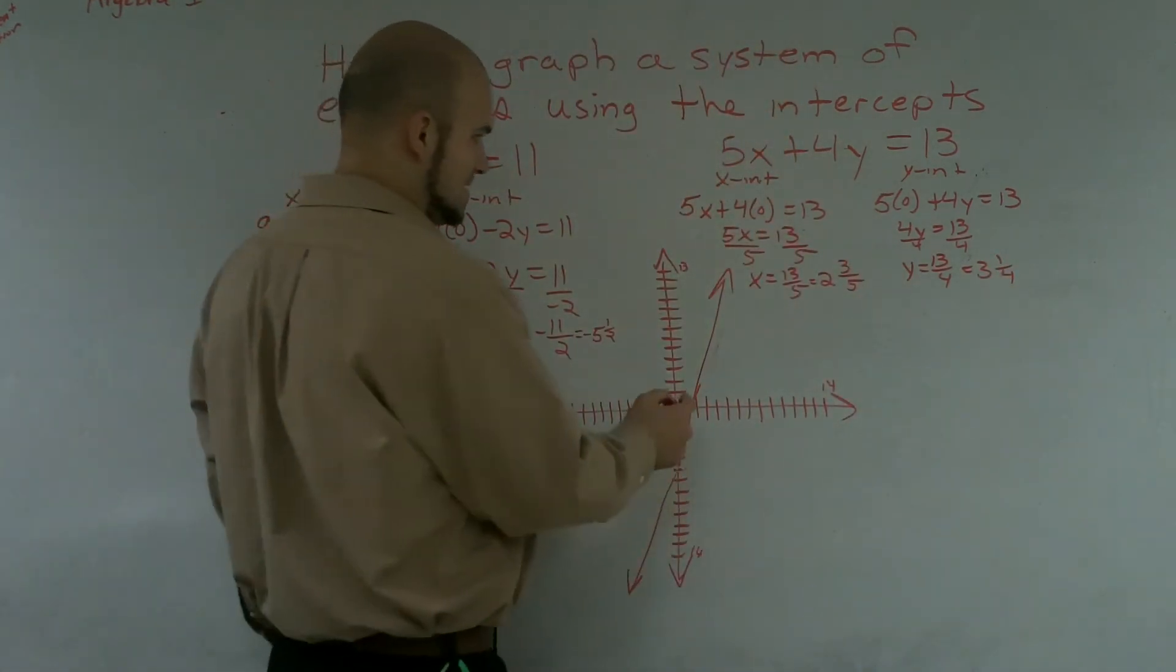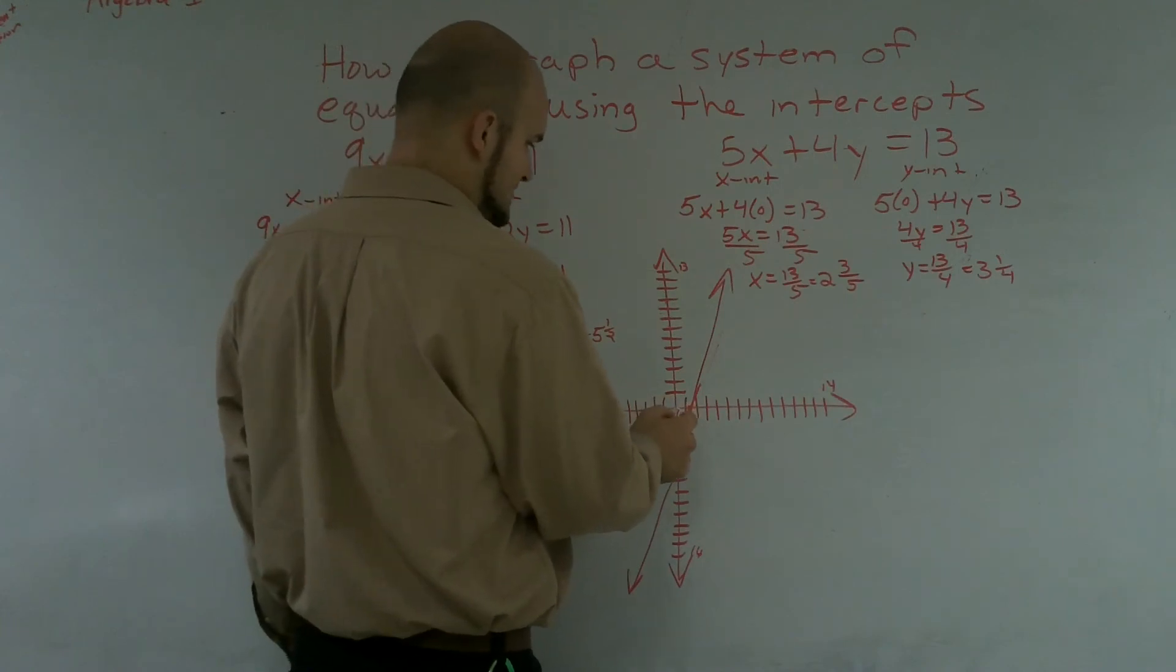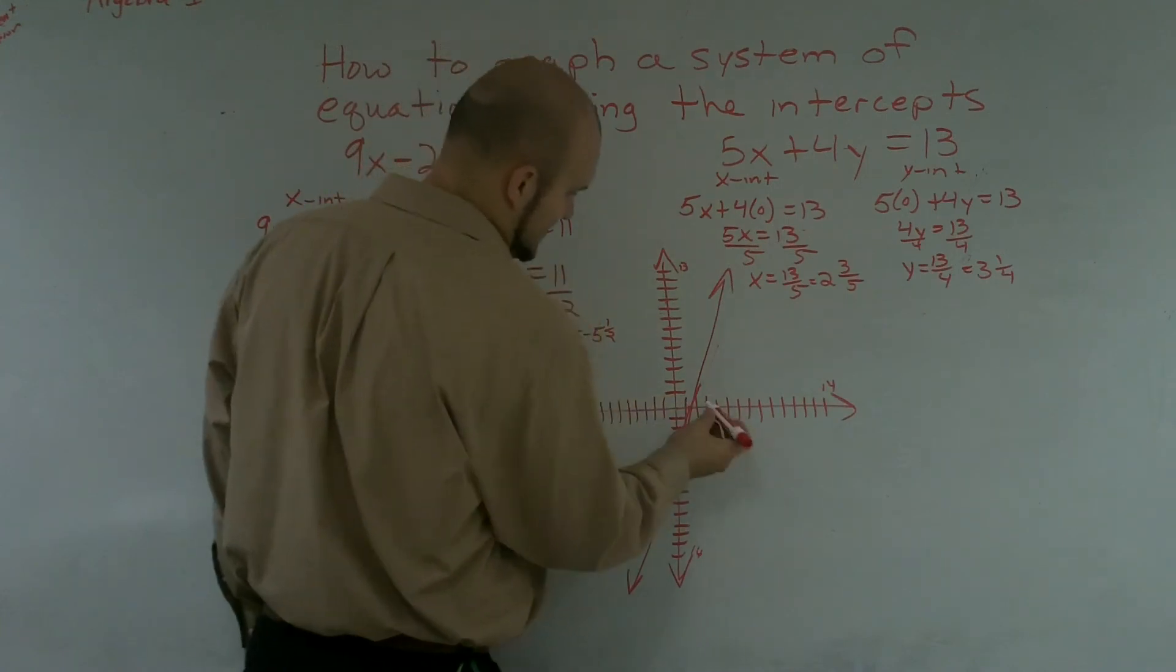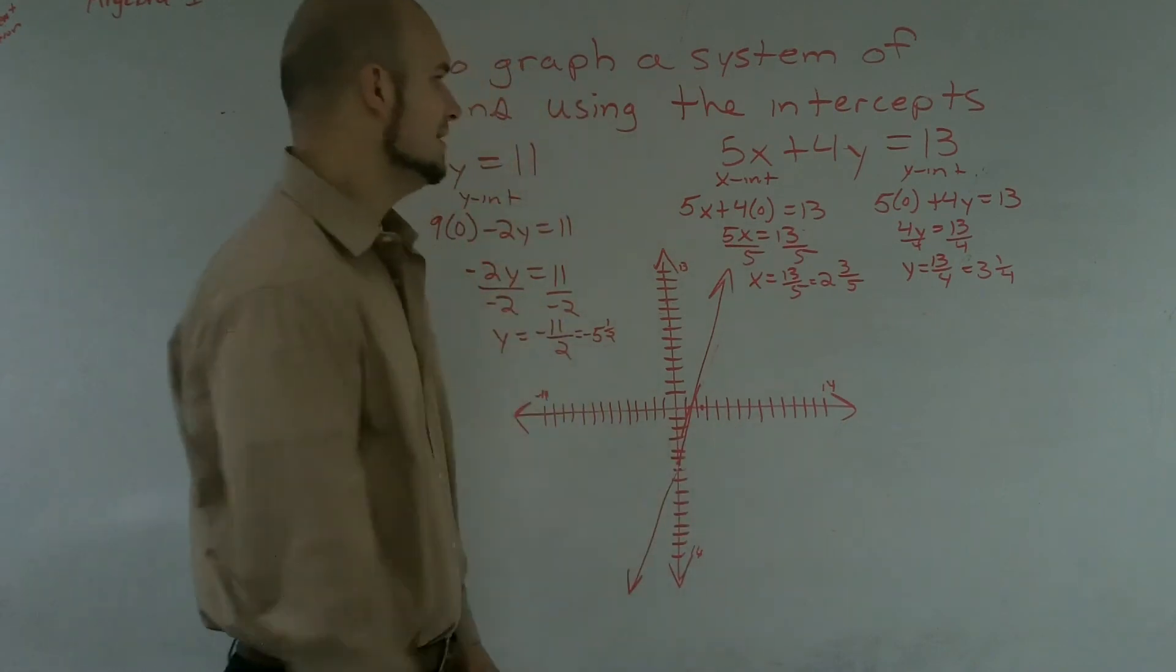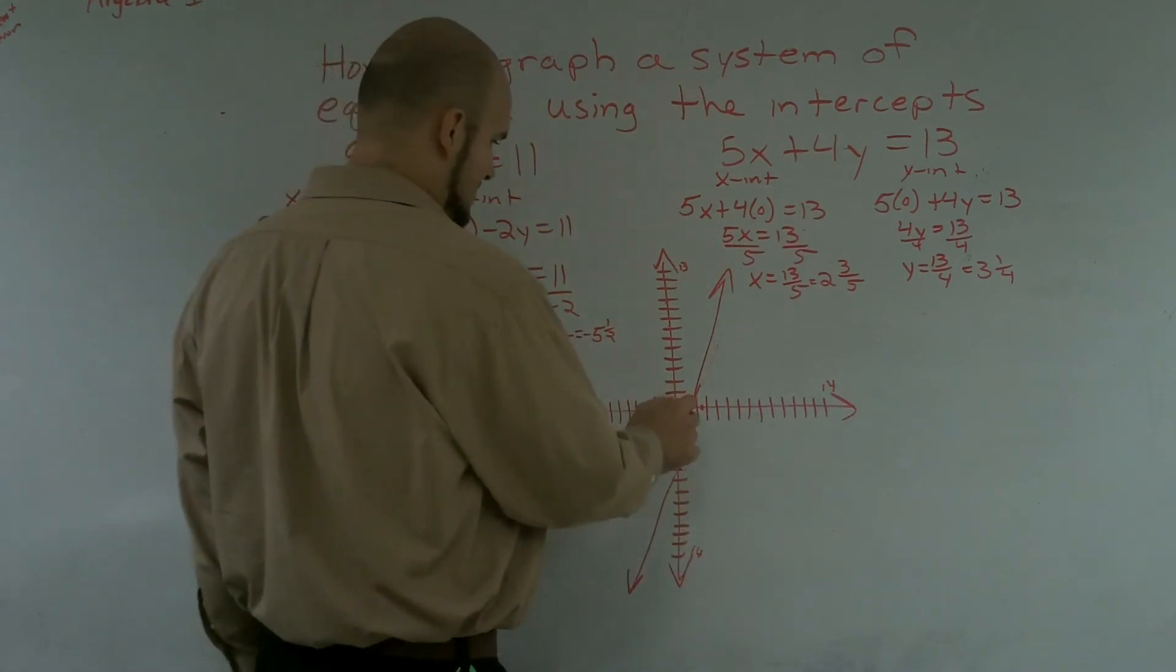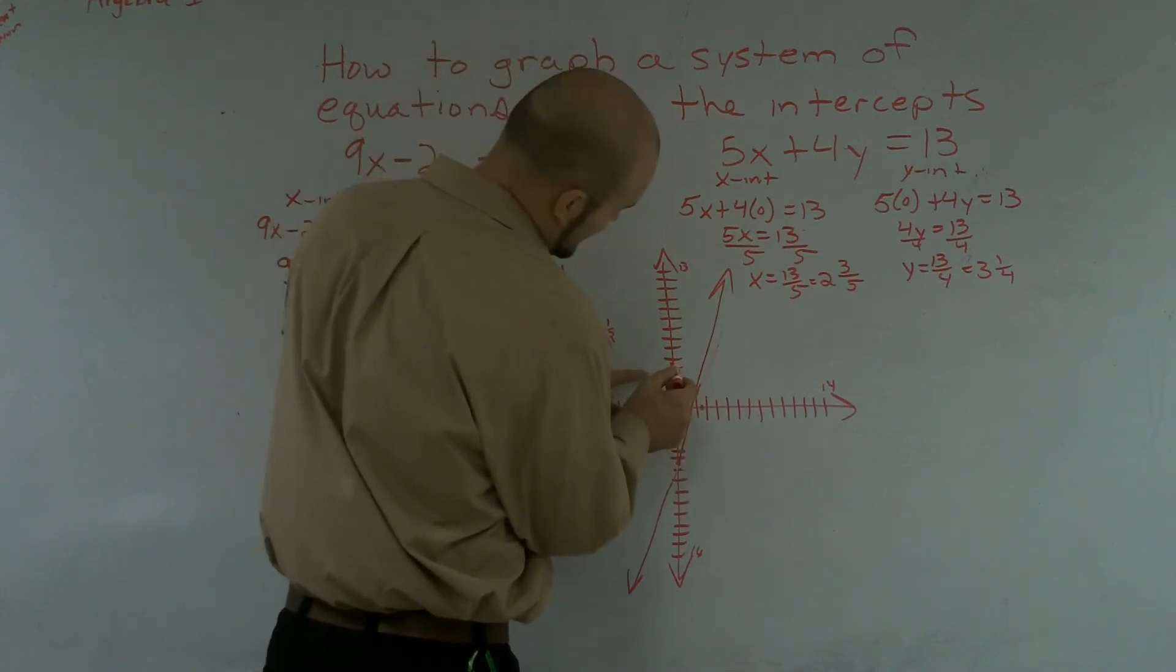So, to find this mixed number, I go to x, which is 2 and 3 fifths. So I go over 2, and then 3 fifths would be roughly somewhere around there. And then 3 and 1 fourth, I go up 1, 2, 3, and 1 fourth. Roughly there. Connect my two points.